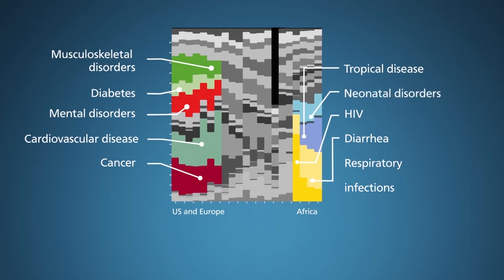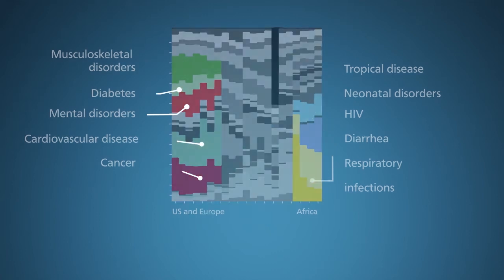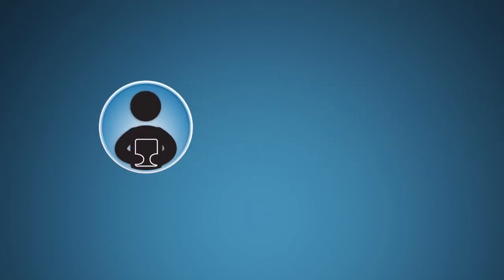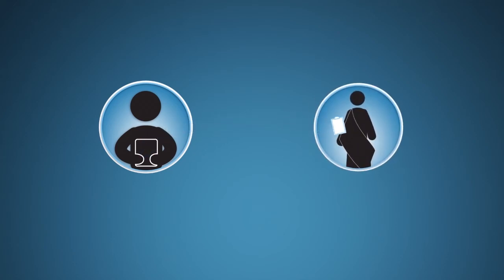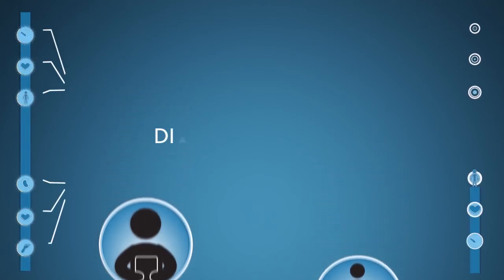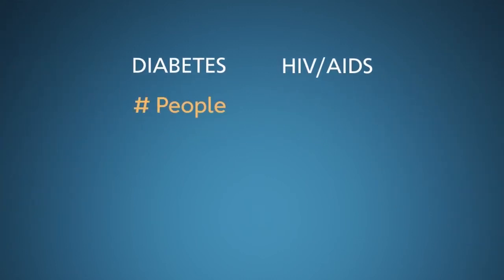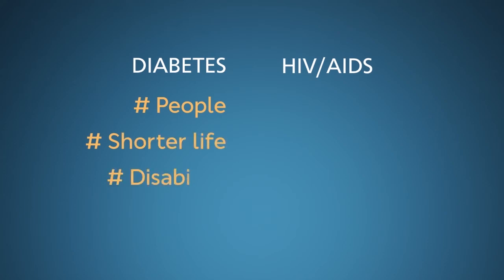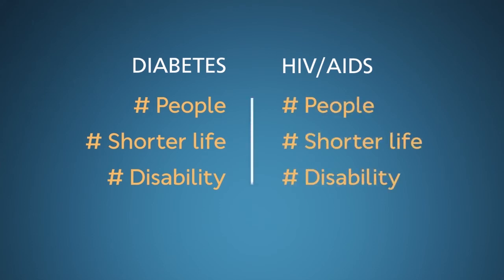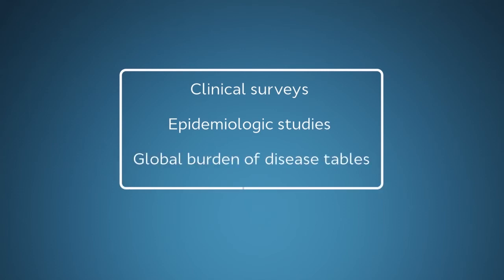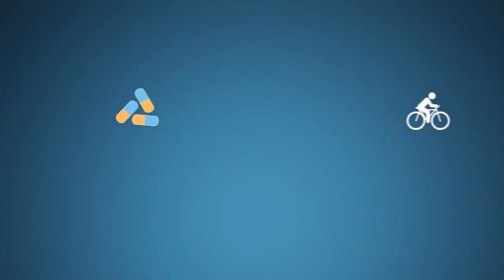You can find even more DALY-based graphics in a special December 2012 issue of Lancet and online at the Institute for Health Metrics and Evaluation website. Let's return to your immediate dilemma. Using DALYs, you can now provide your boss, the Minister of Health, with exactly the kind of estimates and information the donor wants to see. You can quantify the burden of diabetes and compare that to the burden of other diseases, such as AIDS. You still need to collect data on the number of people who have diabetes, how much their lives are shortened on average, and how much disability they suffer, as well as the same data for individuals with HIV infection. The necessary information is all generally available through clinical surveys, epidemiologic studies, and global burden of disease tables.